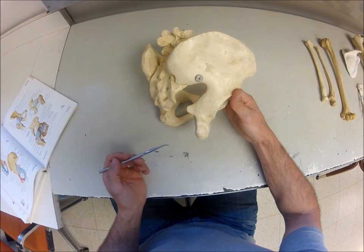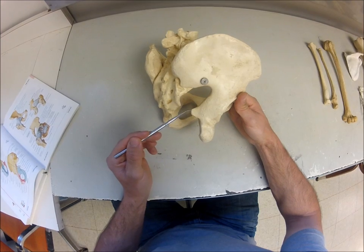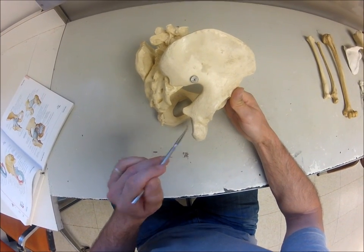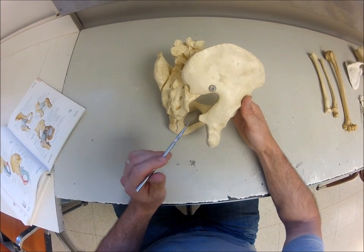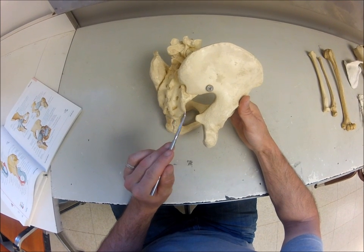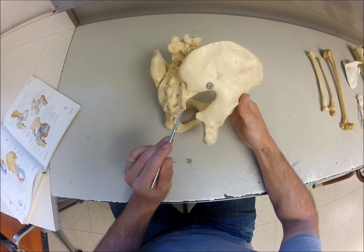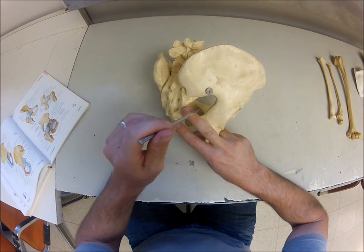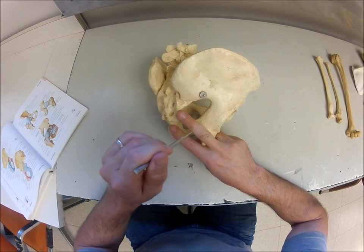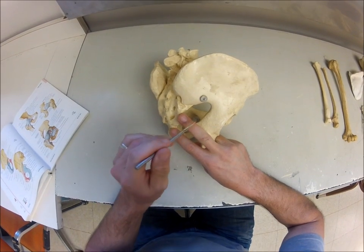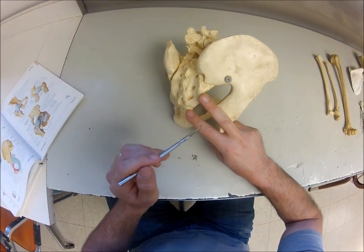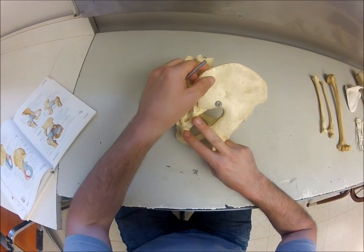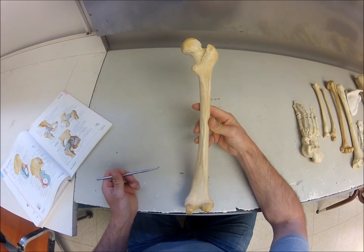Looking at the ischium — here's the ischial tuberosity, and we have this point sticking out called the ischial spine. The ischial spine divides two notches: the greater sciatic notch above and the lesser sciatic notch below. There are also ligaments connecting the sacrum to the ischium: the sacrospinous ligament going to the ischial spine, and the sacrotuberous ligament going to the ischial tuberosity. Together with these ligaments, the greater sciatic notch forms the greater sciatic foramen, and the lesser sciatic notch forms the lesser sciatic foramen.